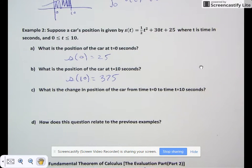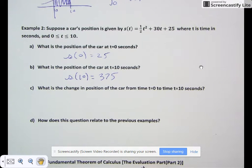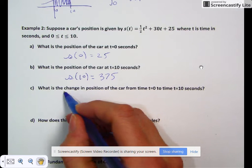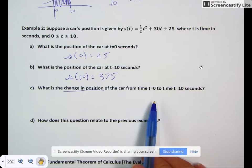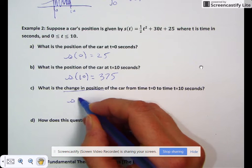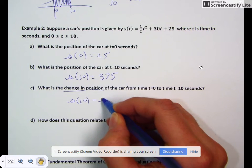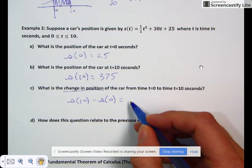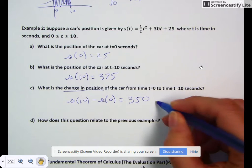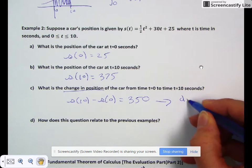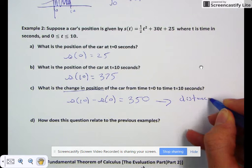What is the change in position of the car from time t = 0 to time t = 10 seconds? Change in position means we take the furthest distance and subtract the closer distance. That's s(10) - s(0) = 375 - 25 = 350. This value of 350 is the distance traveled.